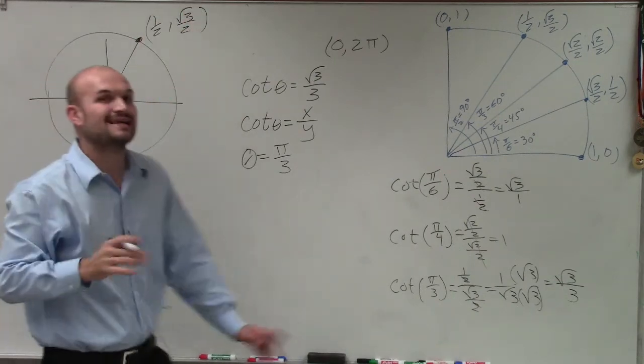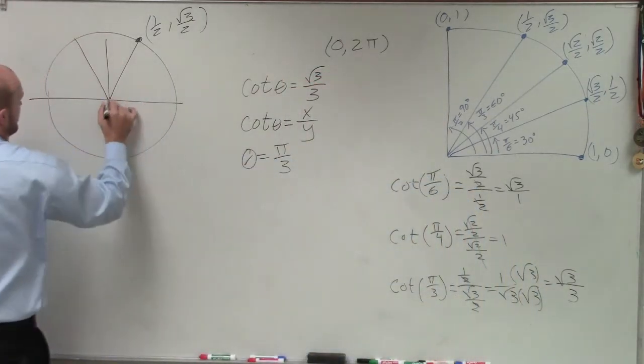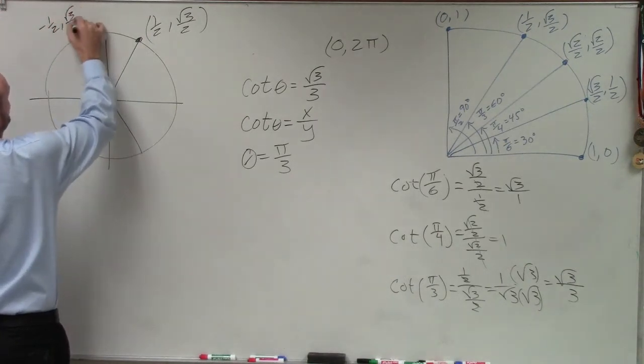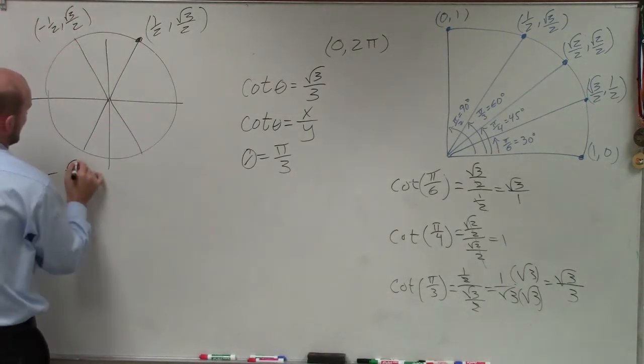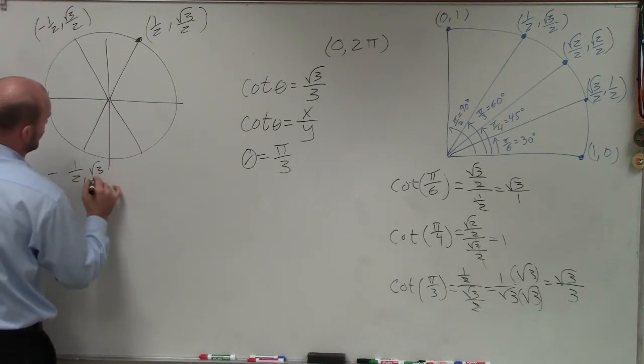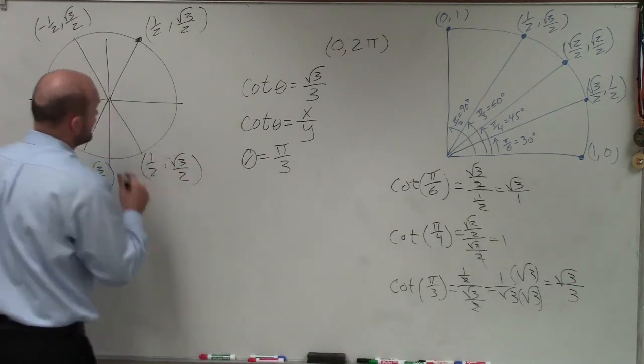Now, this is not the only time this point occurs on our unit circle. It also occurs over here, over here, and over here. Here, it's negative 1 half, comma, square root of 3 over 2. Here, it's negative 1 half, comma, square root of 3 over 2 negative. Here, it's 1 half, comma, square root of 3 over 2. Sorry, that's negative.